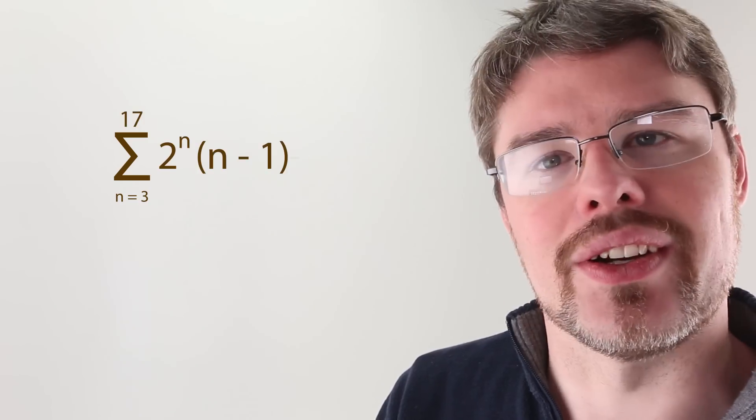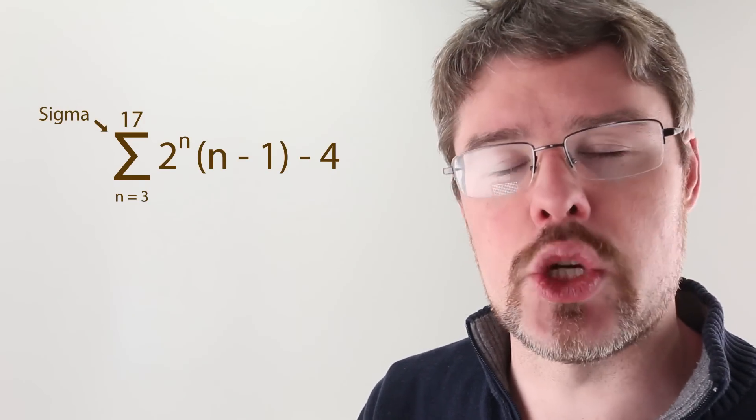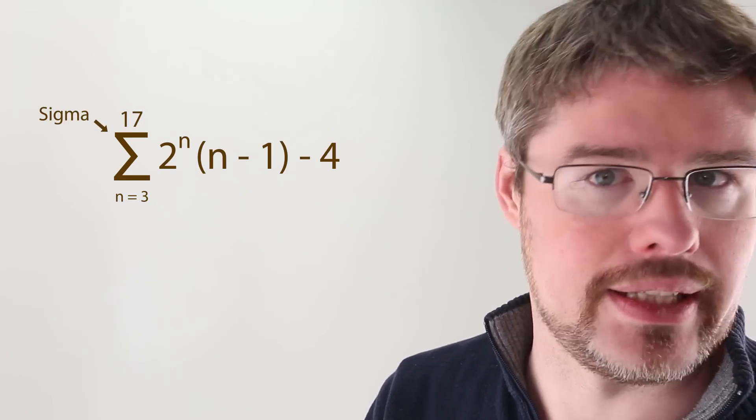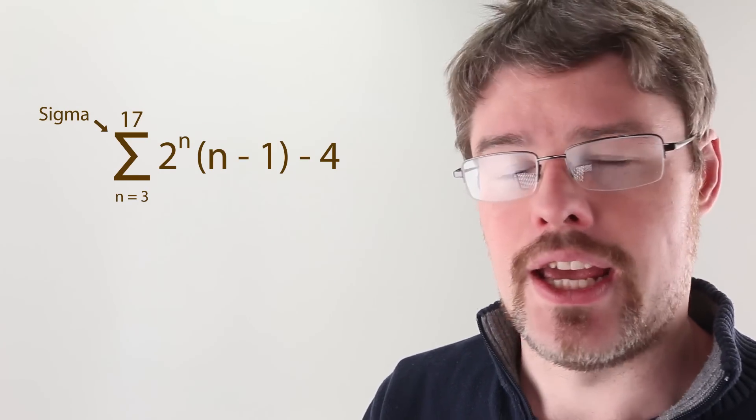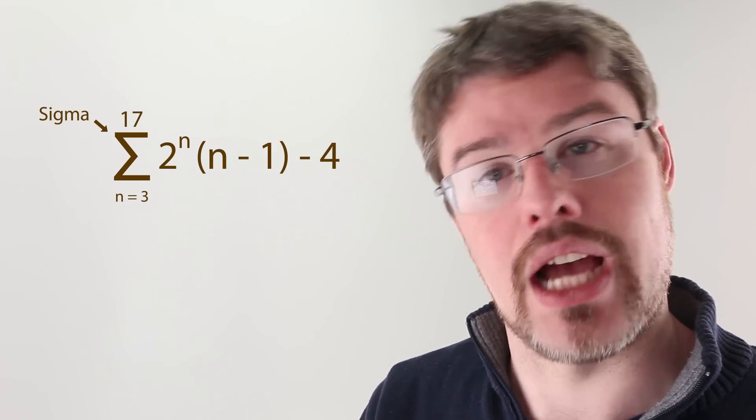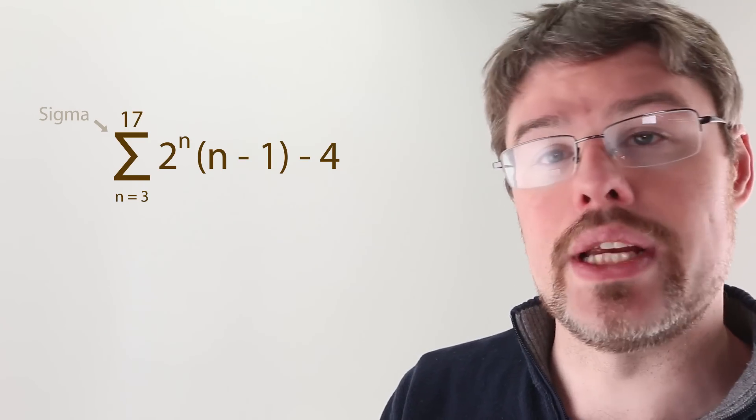It turns out that what we just did, which is to say add all those values up, is something that happens so often in math that we have a way of writing it down with a very convenient shorthand. It's this thing right here. This is called a sigma, a Greek capital letter S equivalent. I think. I don't really speak Greek, but that's just what I understand, so if you have a better understanding then please let me know in the comments below. Anyways, this is how you read that shorthand.